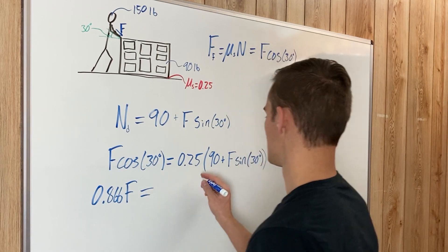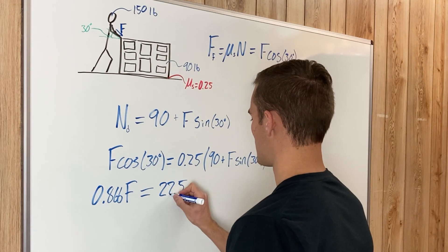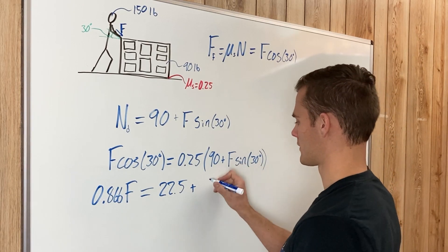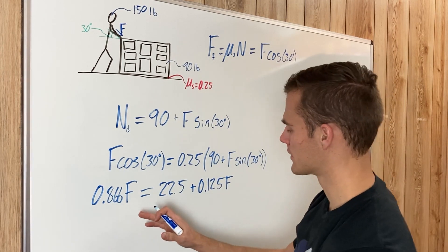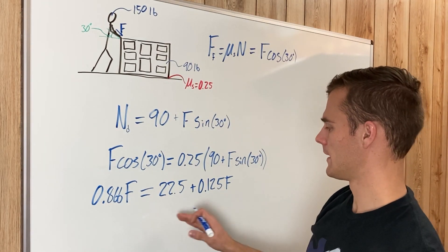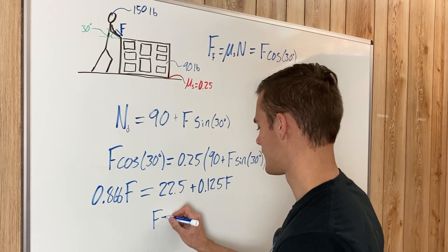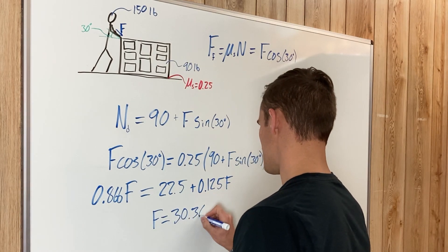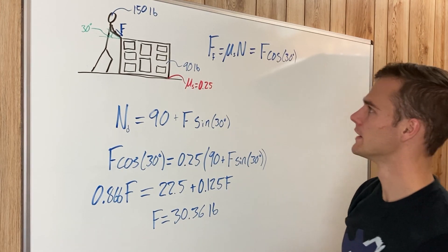Continuing: 0.25 times sine of 30 gives 0.125F. Subtracting 0.125F from both sides and dividing 22.5 by the resulting coefficient, we get F equals 30.36 pounds of force. That is how hard the man has to push on the dresser to get it to move, so we label that as 30.36 pounds.